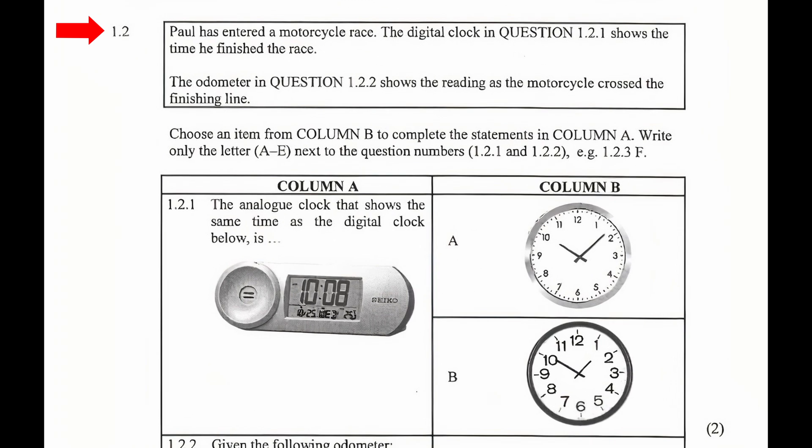Question 1.2: Paul has entered a motorcycle race. The digital clock in question 1.2.1 shows the time he finished the race. The odometer in question 1.2.2 shows the reading as the motorcycle crossed the finish line. Choose an item in column B to complete the statement in column A. Write only the letter A to E next to the question numbers 1.2.1 and 1.2.2. For example, 1.2.3 F.